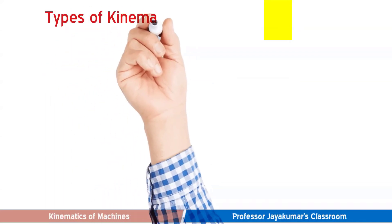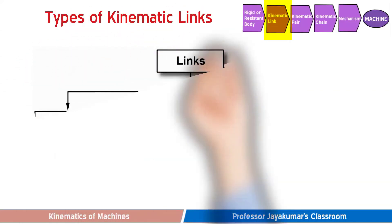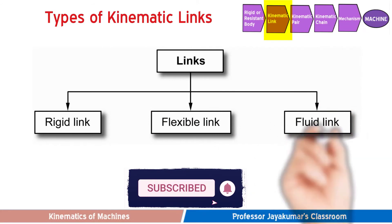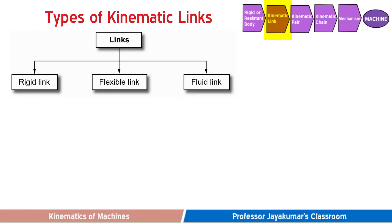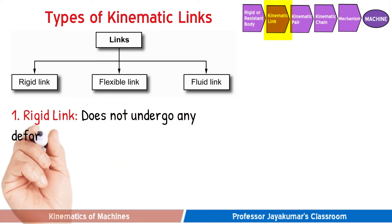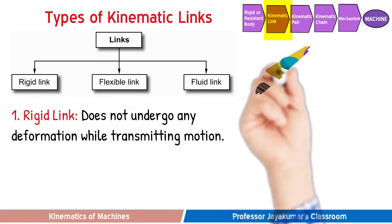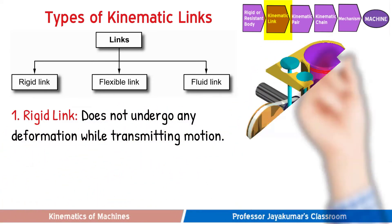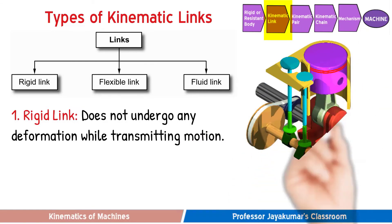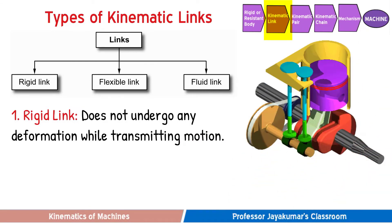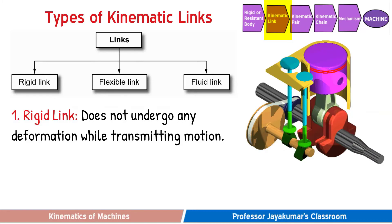There are three types of kinematic links: rigid links, flexible links, and fluid links. A rigid link does not undergo any deformation while transmitting motion. As already discussed, the piston, connecting rod, crank, and cylinder are all examples of rigid links.